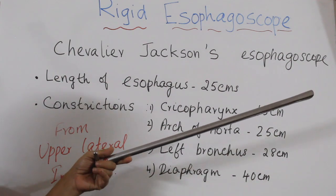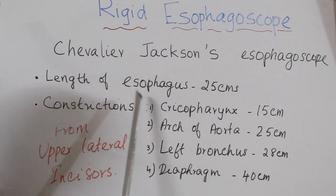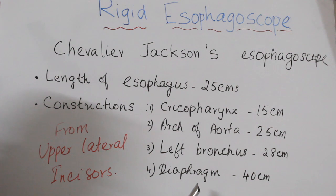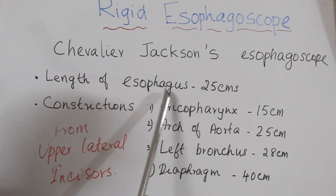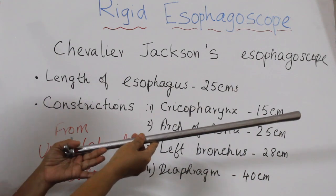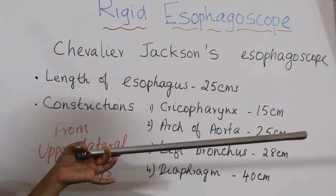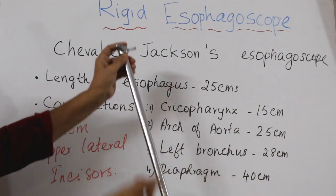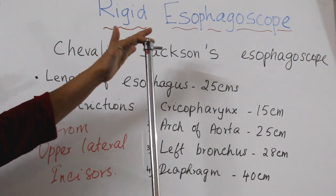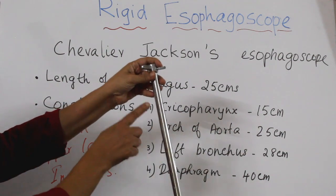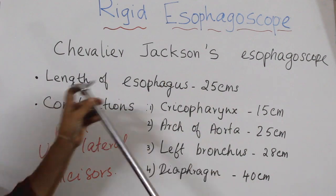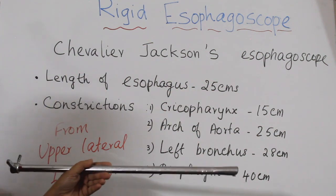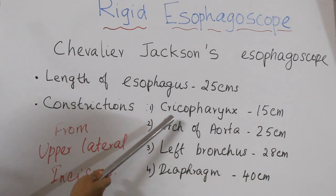Regarding the length of Chevalier Jackson: the length of the esophagus is 25 cm, from the cricopharynx up to the opening of the diaphragm. The length of the Chevalier Jackson rigid esophagoscope is around 42 to 45 cm from one end to the other. You can see markings on it, which indicate the level of the tip of the esophagoscope.